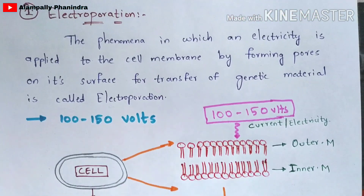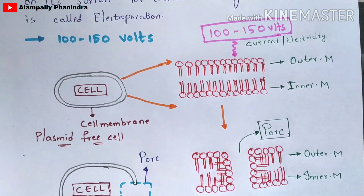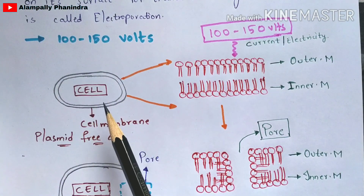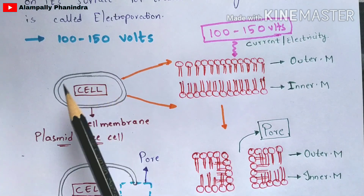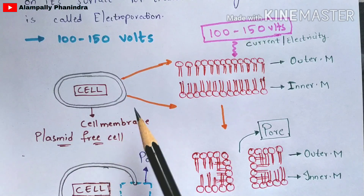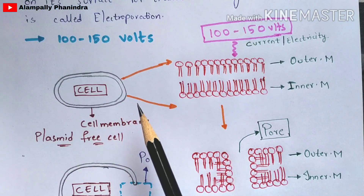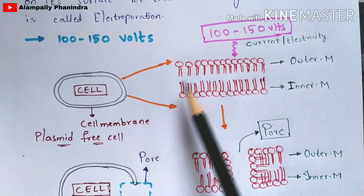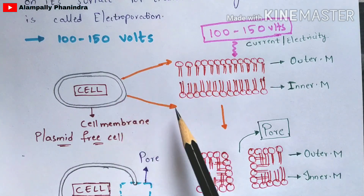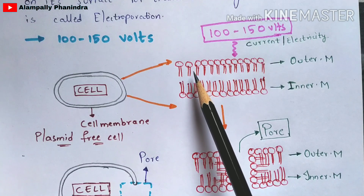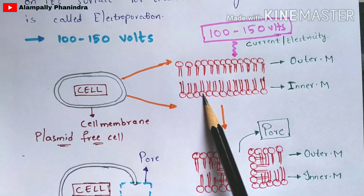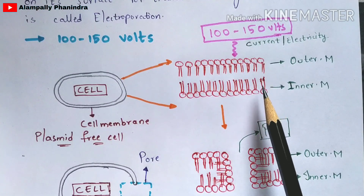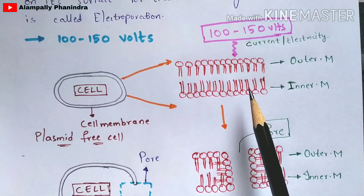Let us understand this in a diagrammatic manner. We take a cell, and we know that the cell is covered by a cell membrane. The cell membrane has two layers — an outer layer and an inner layer. If you zoom into this region of the cell membrane with a microscope, you can see the outer membrane and the inner membrane, which together constitute the cell membrane.